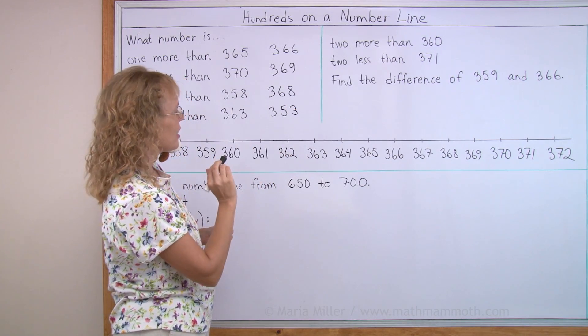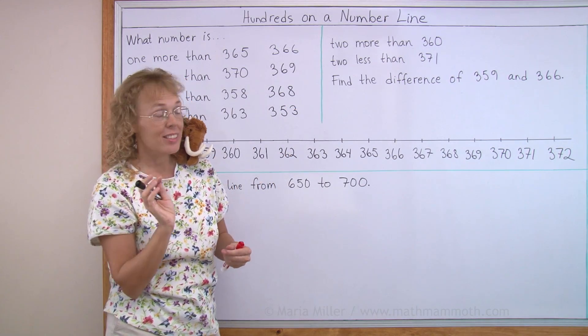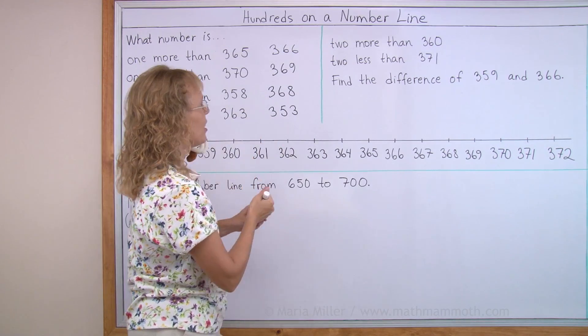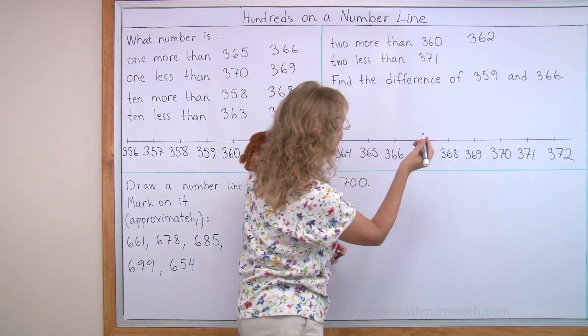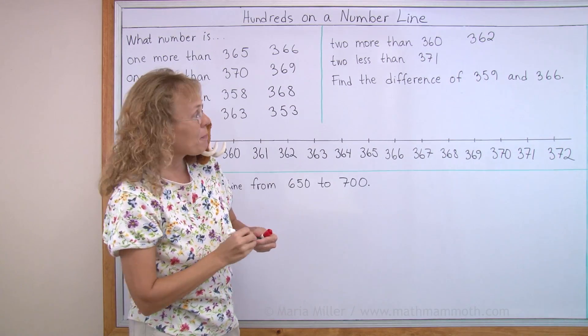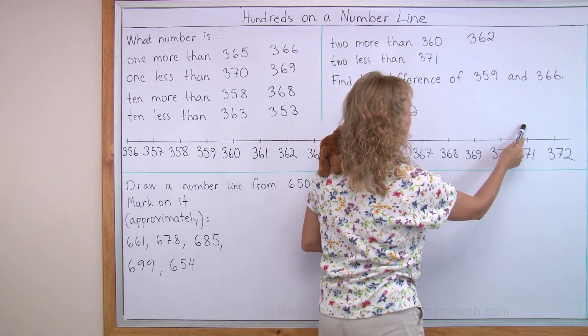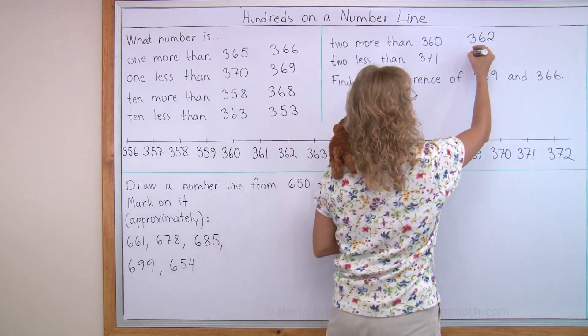Two more than 360. You can tell, right? 362. Two less than 371. Over here, 369.